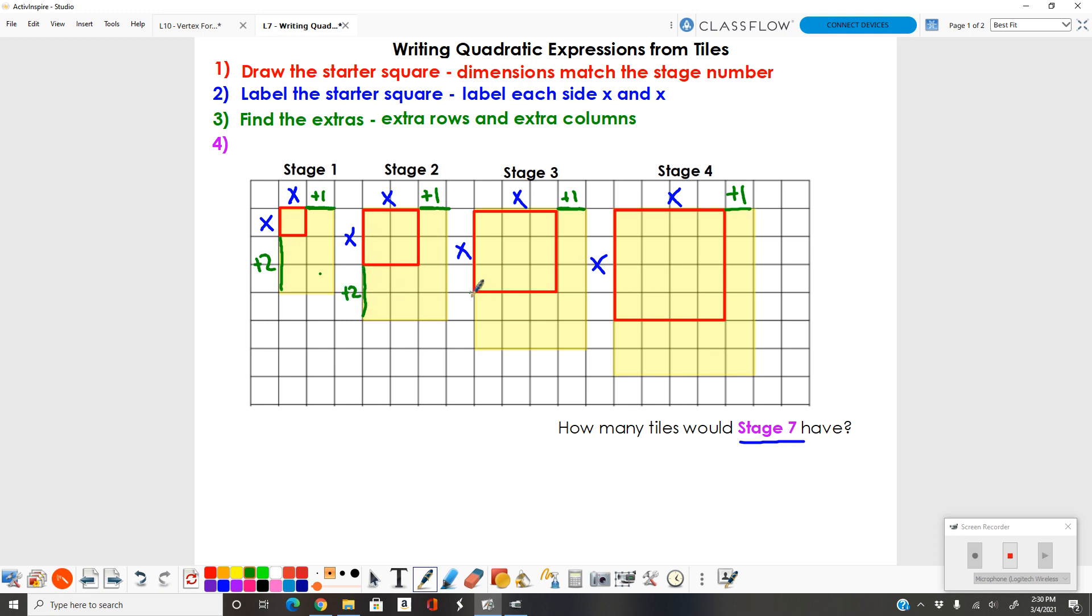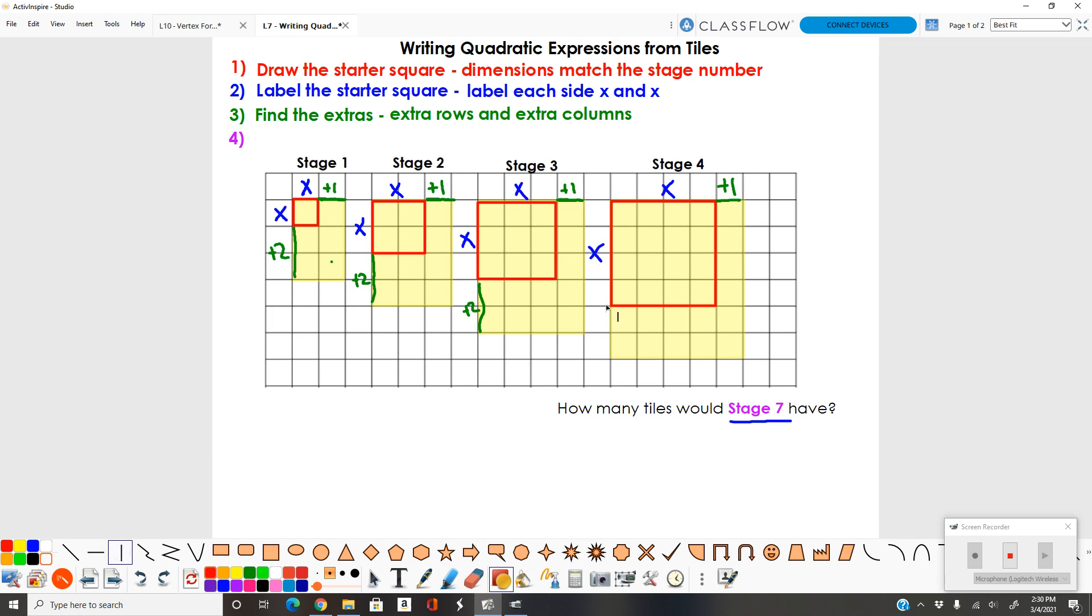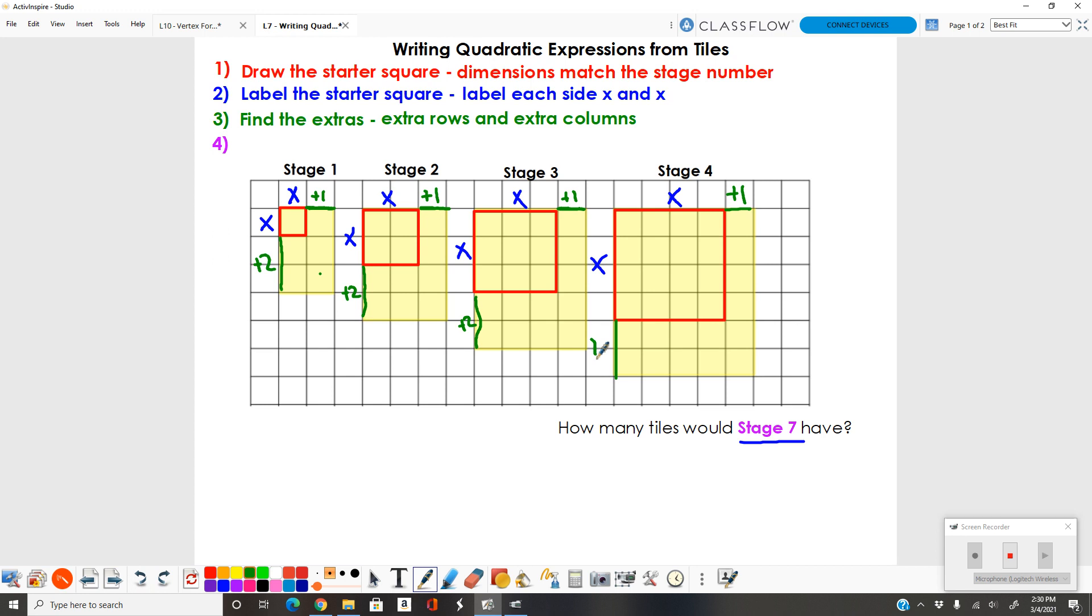You're going to notice that this pattern is going to be the same. We always have the same thing, two extra rows, two extra columns.